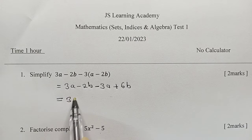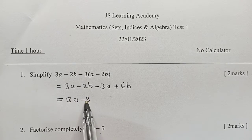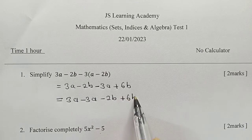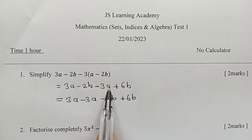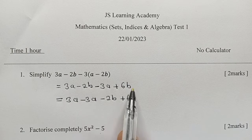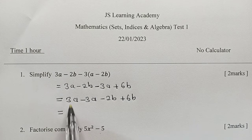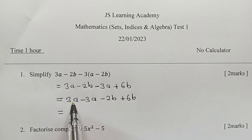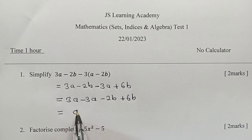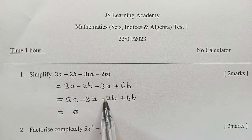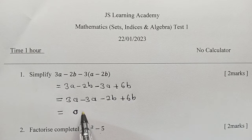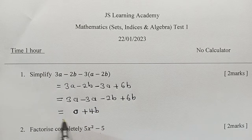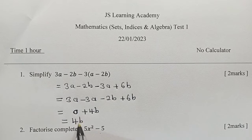So we have gotten rid of the brackets. The next step is to group the like terms. We shall have 3A minus 3A minus 2B plus 6B. 3A minus 3A gives us 0. Negative 2B plus 6B gives us positive 4B. So our final answer here will be 4B.